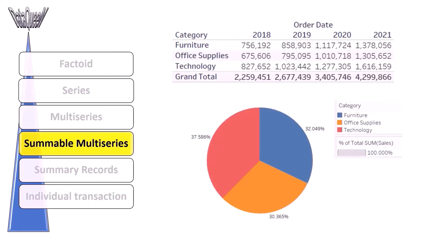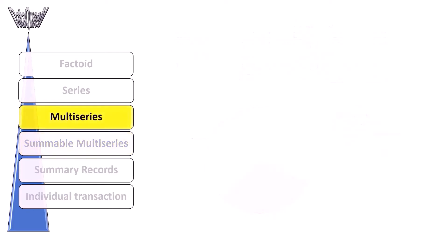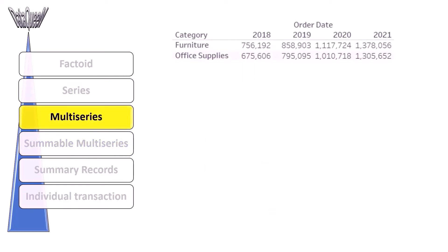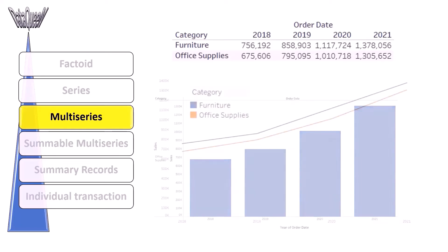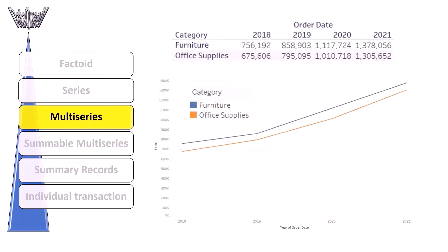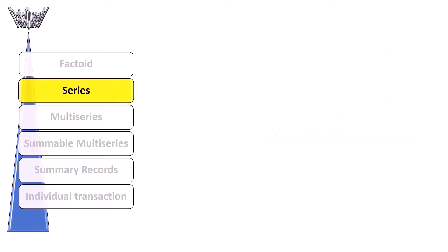The next one is multiseries. A multiseries dataset has simply several series on one chart or table. We can show them together, but we can't meaningfully stack or combine them.